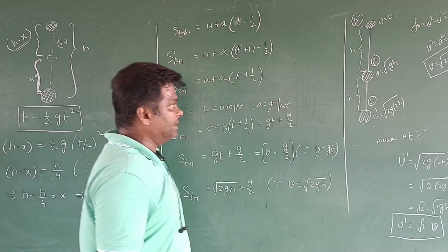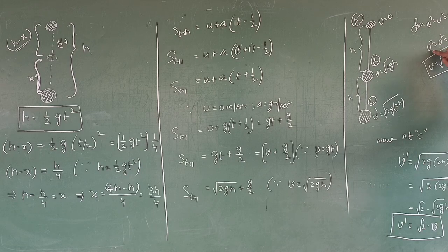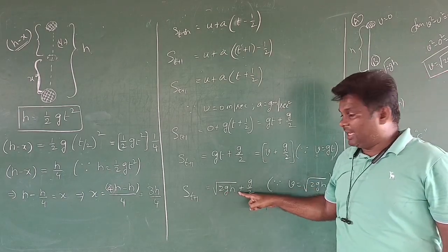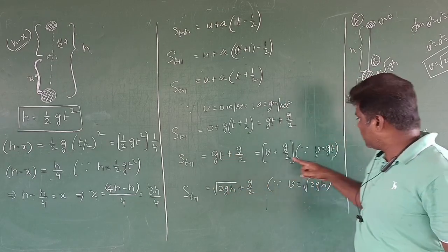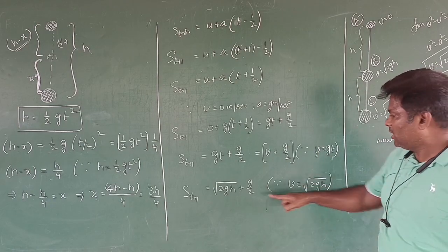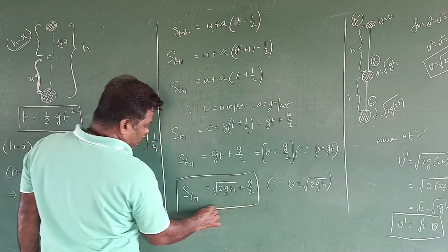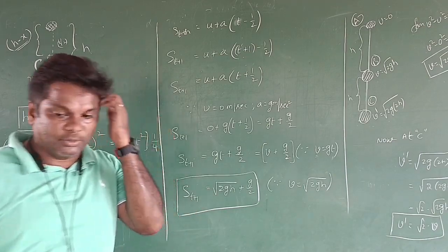Now, gt is equal to v from the formula v equals u plus at, where u equals zero, so v equals gt. In case of a freely falling body, v squared minus u squared equals 2gh. Since u equals zero, v squared equals 2gh, so v equals root 2gh. Substituting, the distance covered in the next one second equals root 2gh plus g by 2.